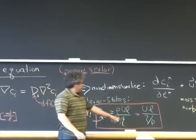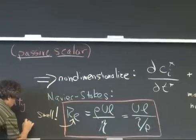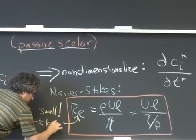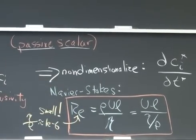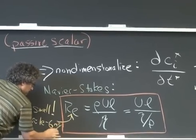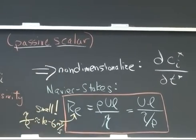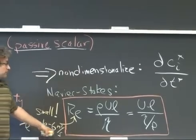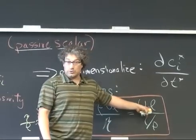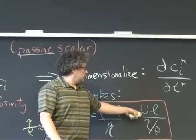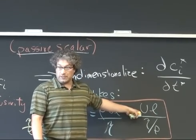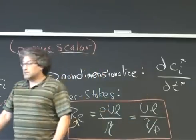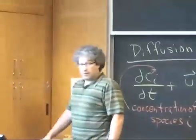And for perspective, eta over rho for water is 10 to the minus sixth meters squared per second. We end up having length scales that are usually on the order of microns, so we get a 10 to the minus sixth from this. This is usually tens or hundreds of microns per second, so we get another 10 to the minus four for this. So it's routine for this parameter, the Reynolds number, to be small—1, or 10 to the minus three, 10 to the minus four.